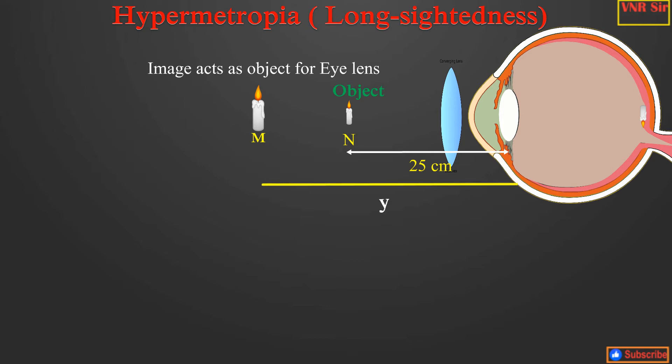Let us take x as the distance of near point of the defective eye. Object distance is equal to 25 cm and the image distance is equal to the distance of near point of the defective eye.